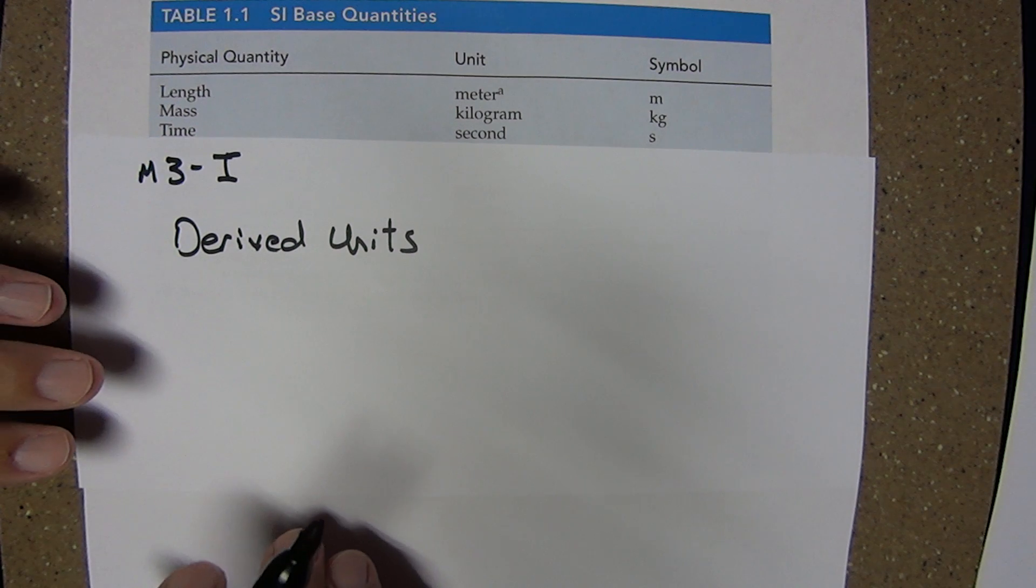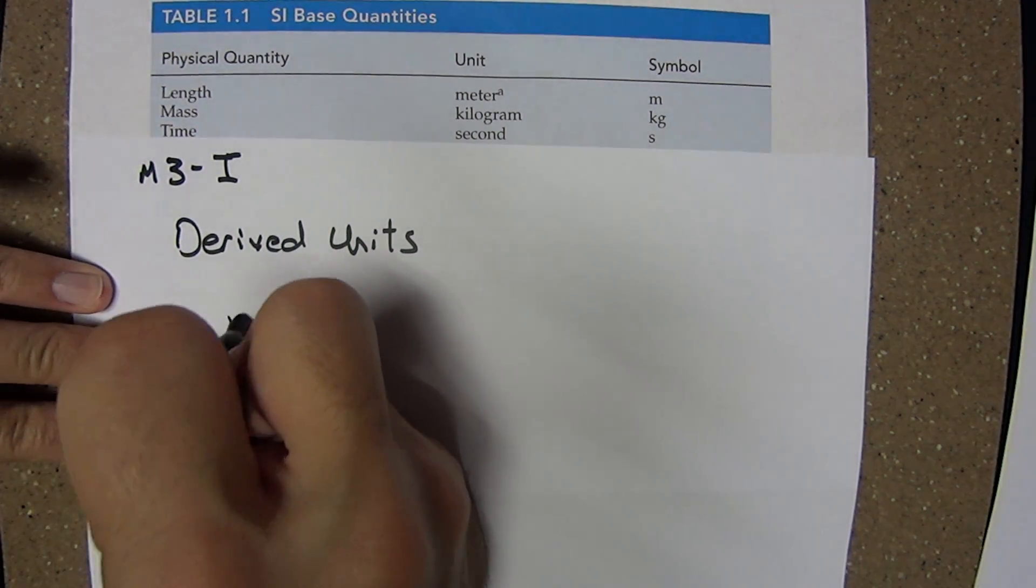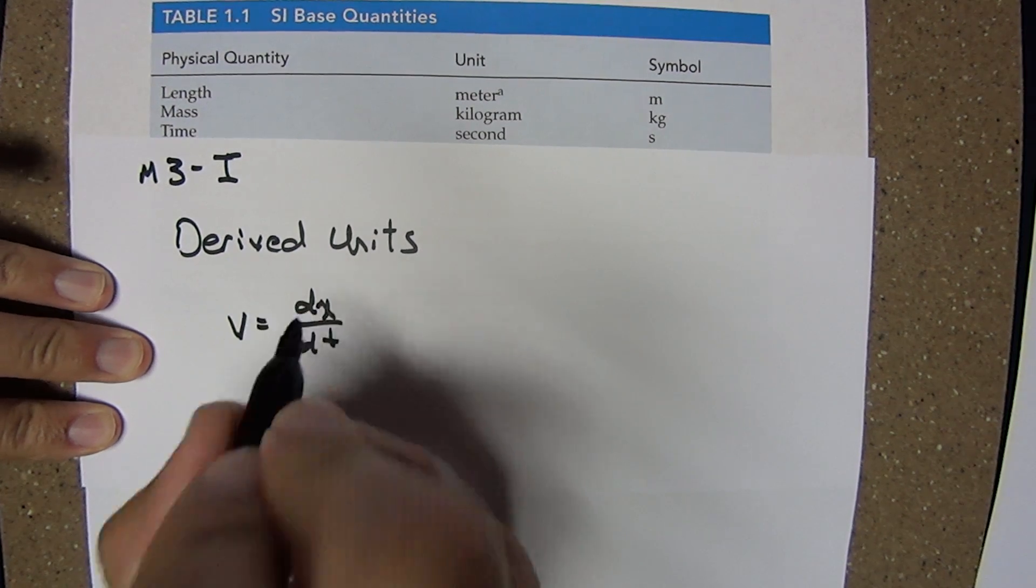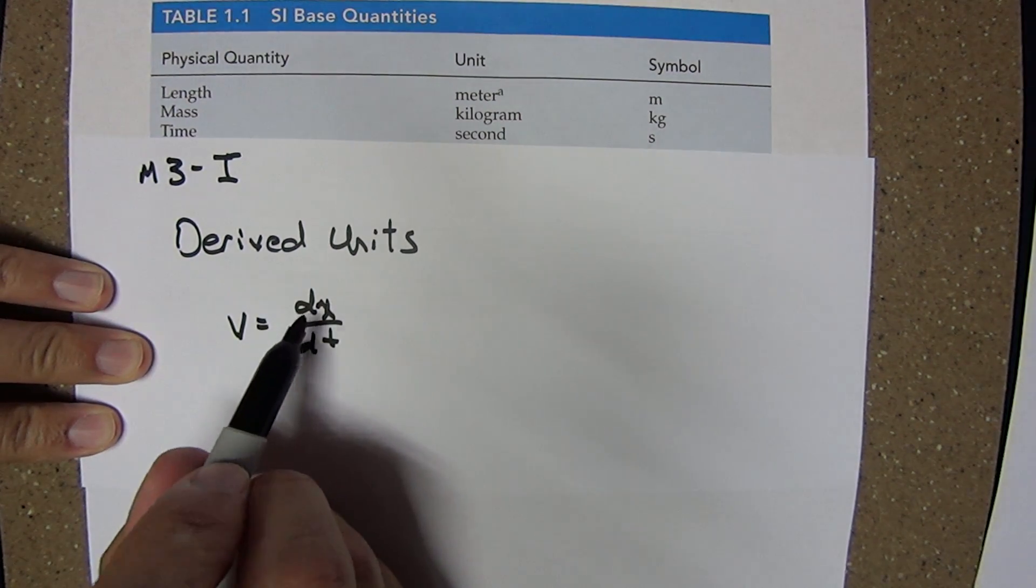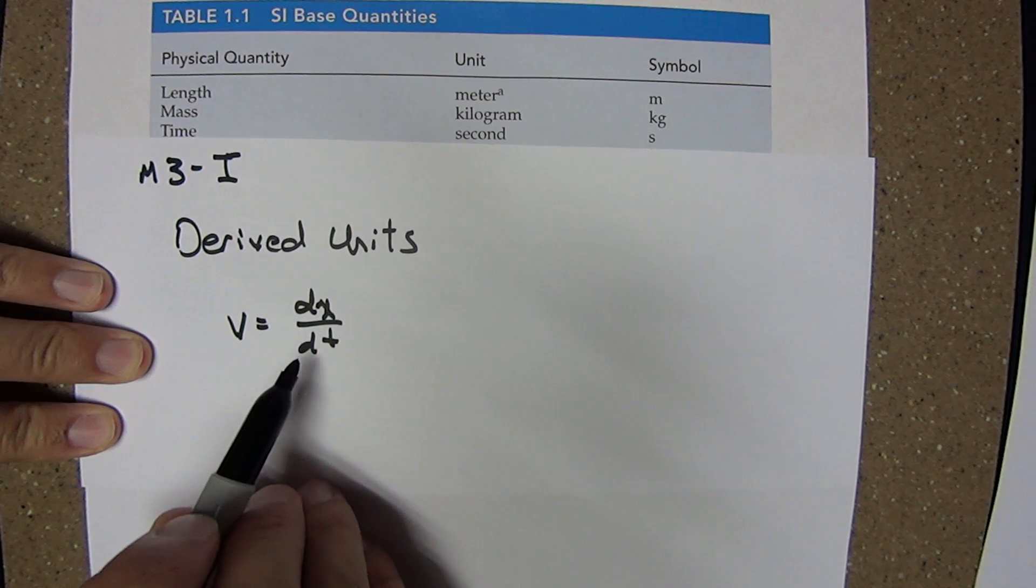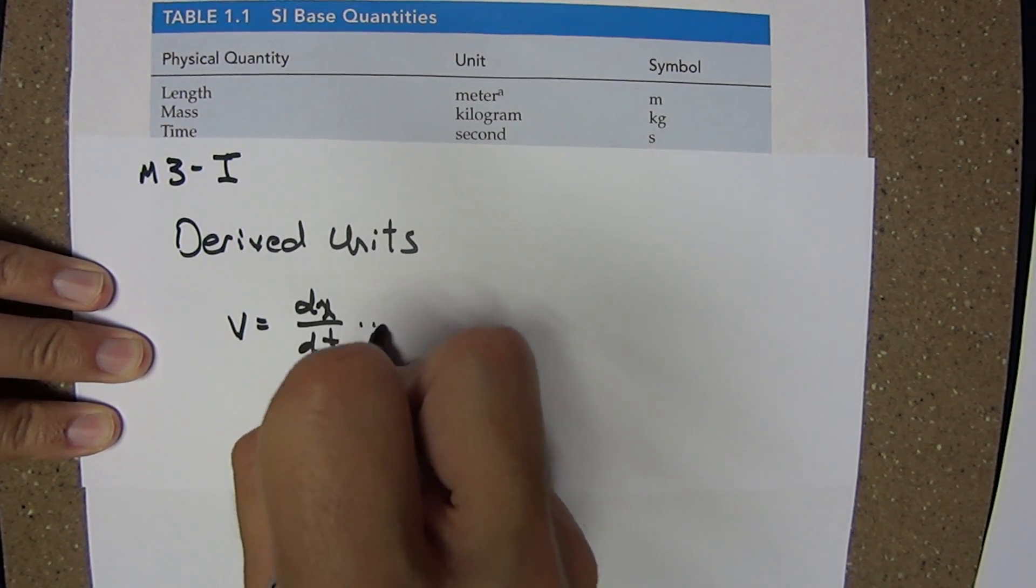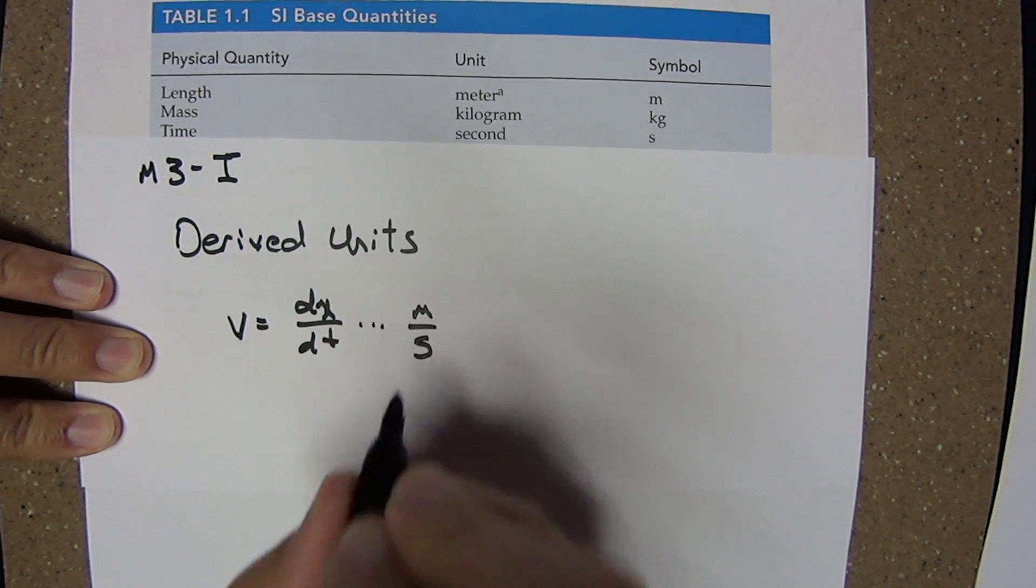Velocity is the rate of change of position with respect to time. Position is measured in length units, meters. Time measured in seconds. A velocity has units of meters per second.